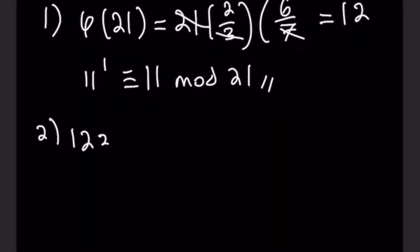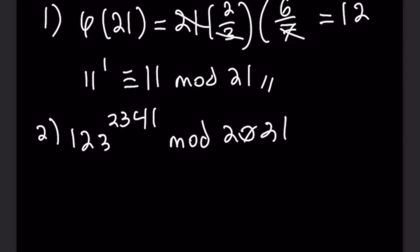For number two we have 123^2341 and we want to reduce that mod 2021. Without a calculator, the traditional approach would be very painful, so instead let's split it up. The divisors of 2021 are 43 and 47. The general rule for prime factorization is to try divisibility rules first; if none work, take the floor of the square root and trial-divide by all primes up to that point.